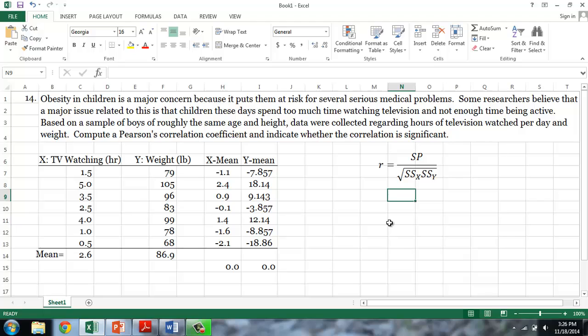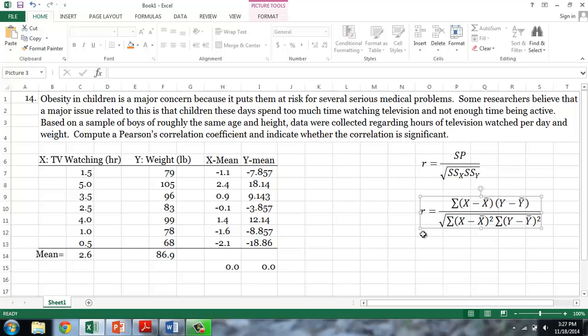Pearson's correlation coefficient, indicated by r, is equal to the product of the deviations divided by the square root of the squared deviations of x times the squared deviations of y. The long form of this equation is given here.